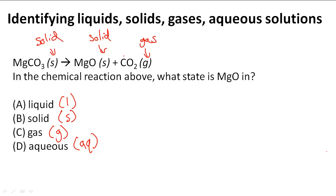The reactant is a solid that breaks down or decomposes into another solid and gives off carbon dioxide gas. We have to know what each one means. Liquid means it's in the liquid state. Solid means it's in a solid state. Gas means it's in a gaseous state.